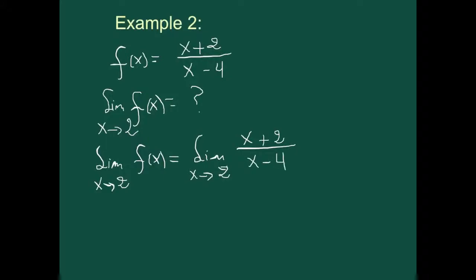So what I'm going to do is substitute 2 for x. This gives us 2 plus 2 over 2 minus 4, which is 4 over negative 2, which is negative 2.